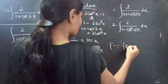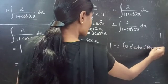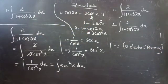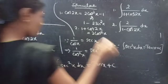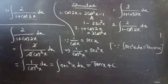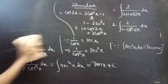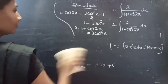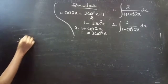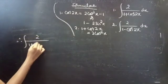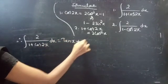Since integral of secant square x dx equals to tan x plus c, this equals to tan x plus c. Therefore, integral 2 by 1 plus cos 2x into dx equals to tan x plus c.